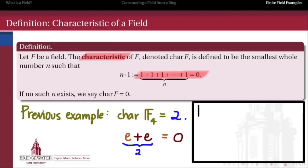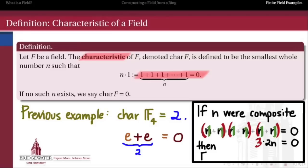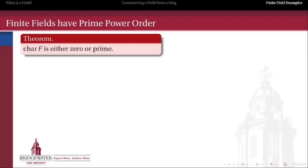Now, the first thing we can say about the characteristic of a field is what happens if that characteristic were a composite number. Let's say we tried to have a field whose characteristic were 6. Then adding 1 to itself 6 times gives 0. By grouping those 1s — say by 2s — we find that 2 multiplied by 3 gives 0 in this so-called field. So a composite characteristic gives rise to a zero divisor. And since in a field everything besides 0 is a unit and cannot be a zero divisor, any field's characteristic, if it's not 0, must be a prime number.